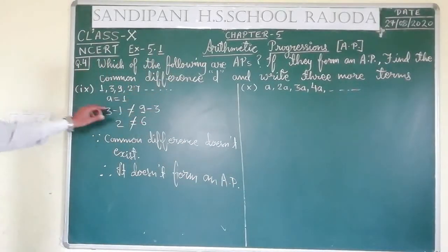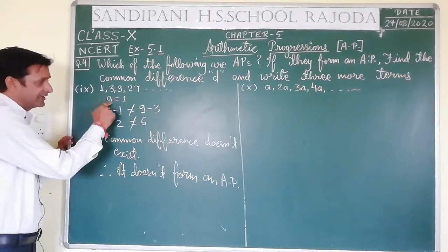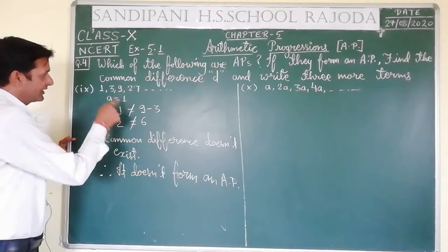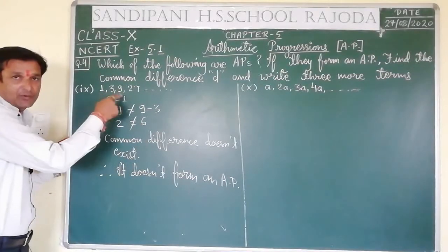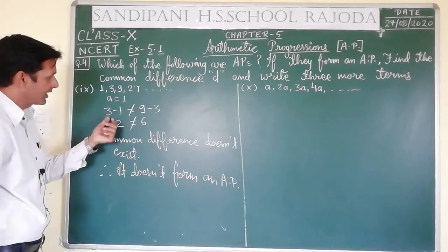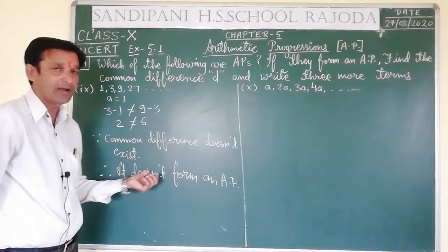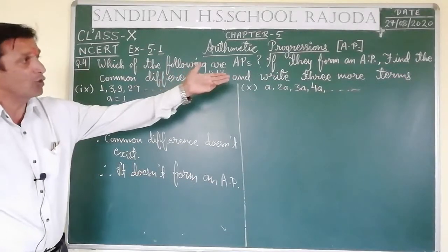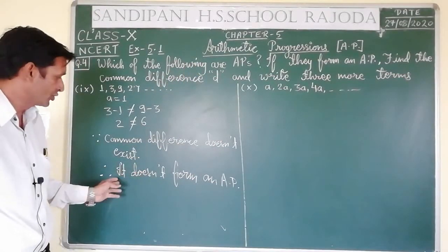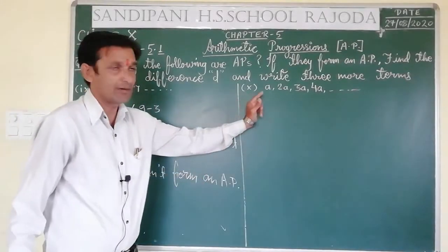Now let's look at the 10th question. The method is: first write A (first term), subtract the first term from the second term, and check if it equals the third term minus the second term. If yes, common difference exists and we write three more terms. Since common difference does not exist here, it does not form an AP.